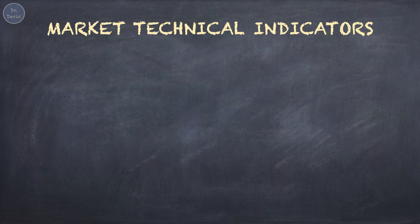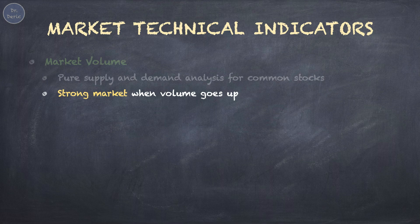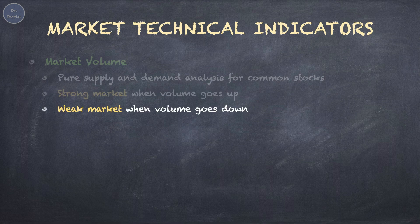The following are some other market technical indicators. First, Market Volume. Market Volume is a pure supply and demand analysis for common stocks. It refers to the total number of shares traded in the stock market within a specific time period. A strong market typically corresponds with rising trading volume, as it indicates robust demand and active trading. Conversely, a weak market is characterized by decreasing trading volume, which may signify reduced interest and market uncertainty.